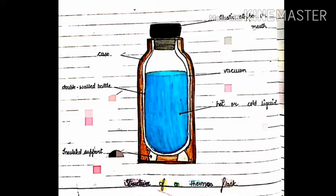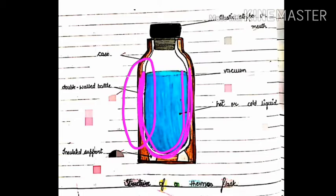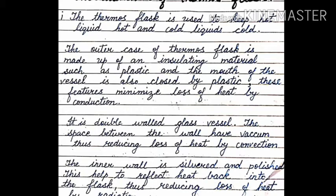As you can see in the picture, the thermos flask consists of a double-walled bottle made up of thin glass, with the inner surfaces of the wall silvered and polished. The inner part of this flask is polished or silvered.